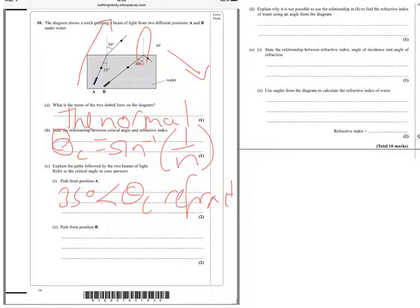But in part B, we've got 60 degree angle, and it's reflecting, so 60 degrees must be more than the critical angle, so we get total internal reflection. And you see how we've referred to the critical angle, as asked, in our answers.